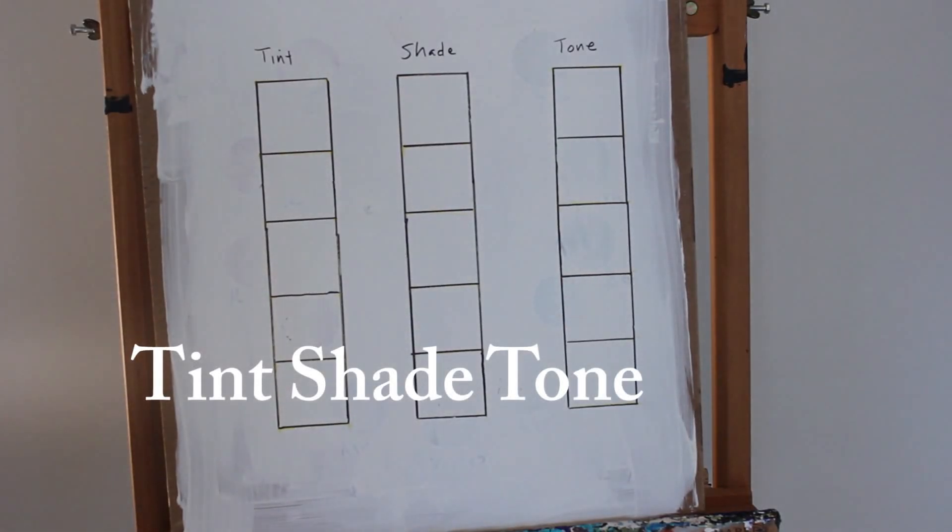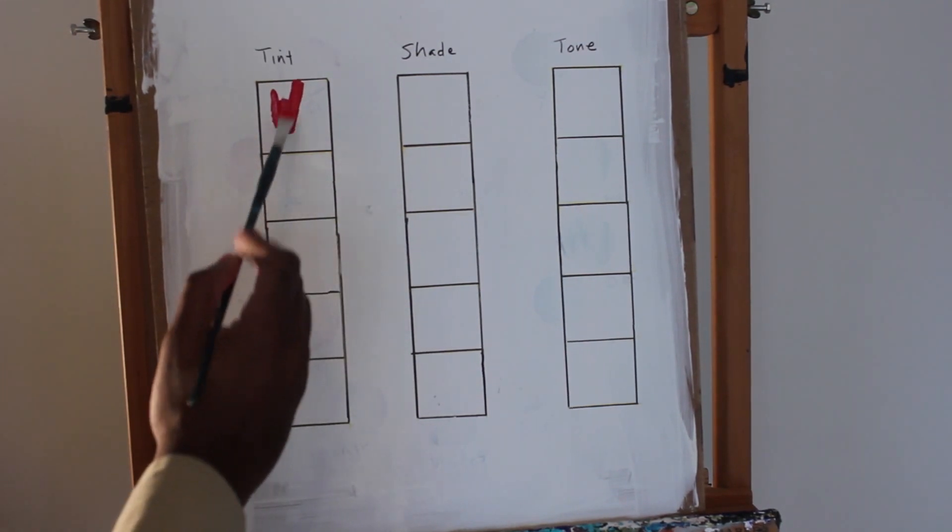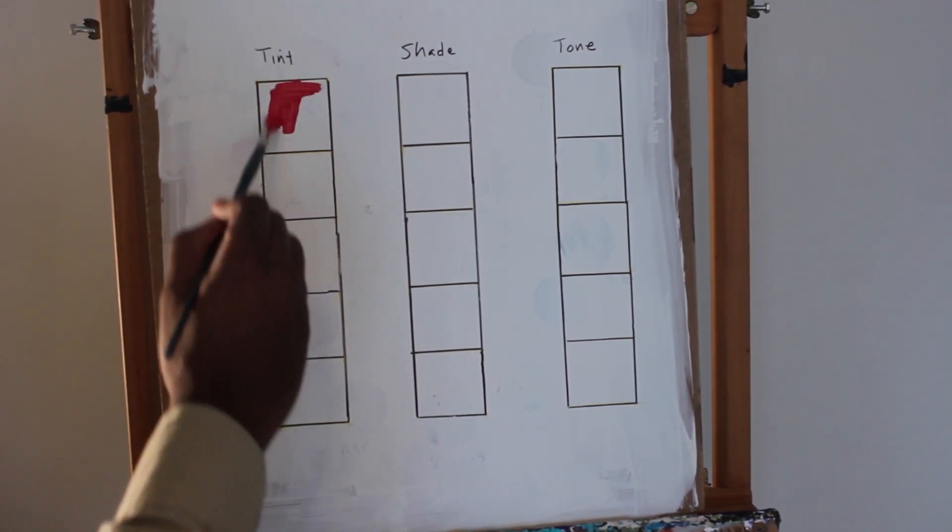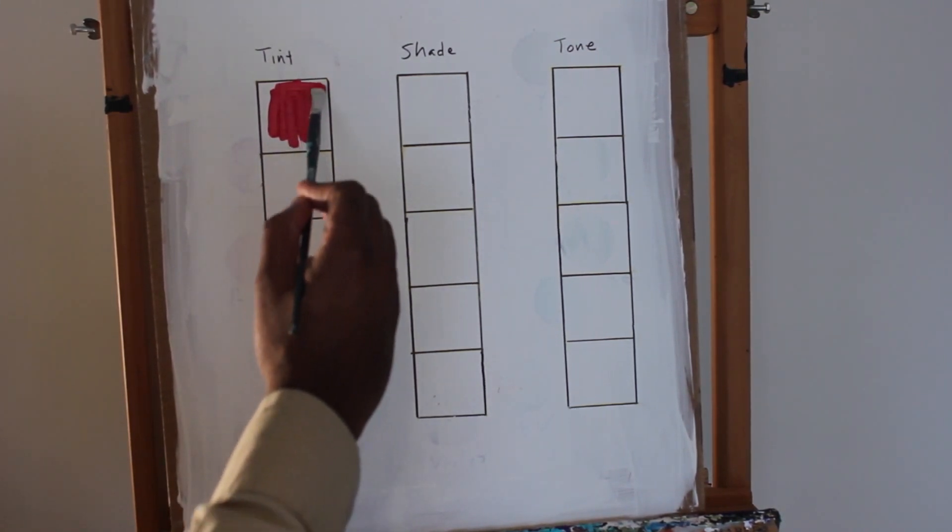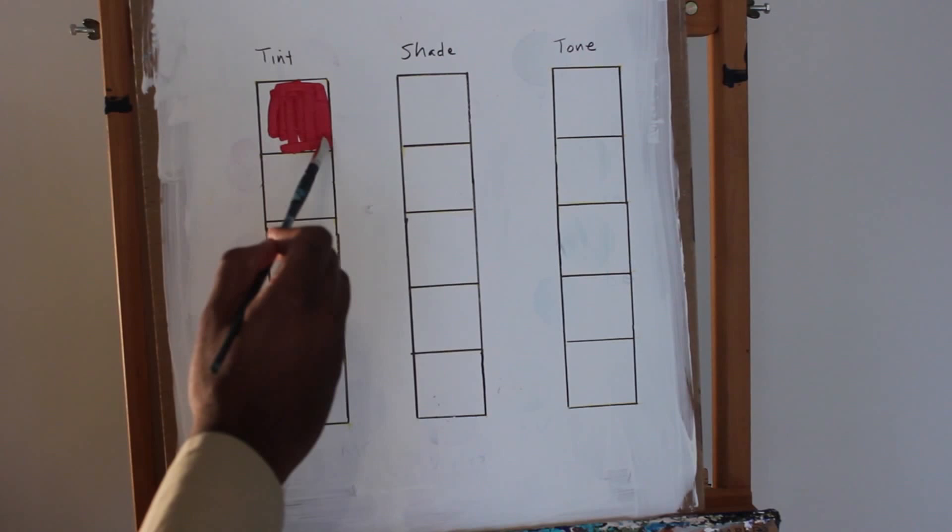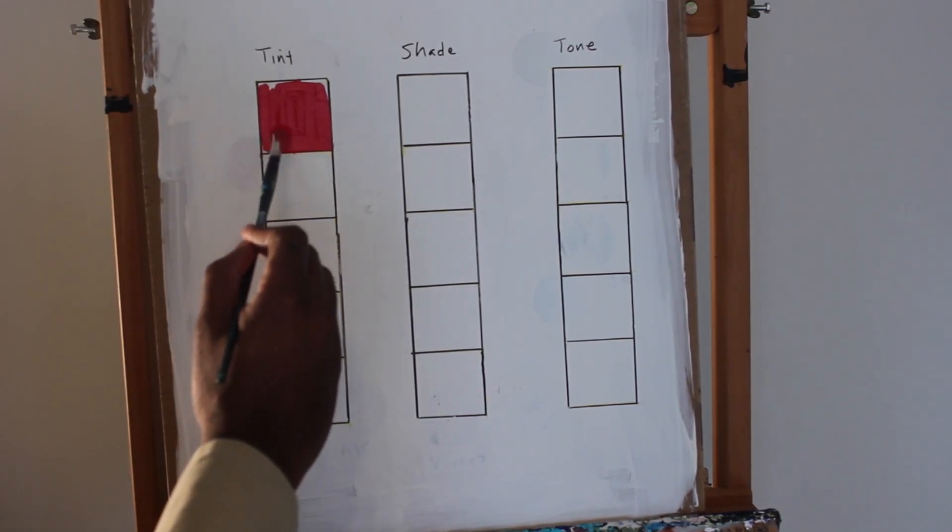In this lesson, I'm going to show you how to make tint, shade, and tone. I'll talk about each one, but I'm starting with tint. Tint is basically adding a particular color to another color, and that color is white.